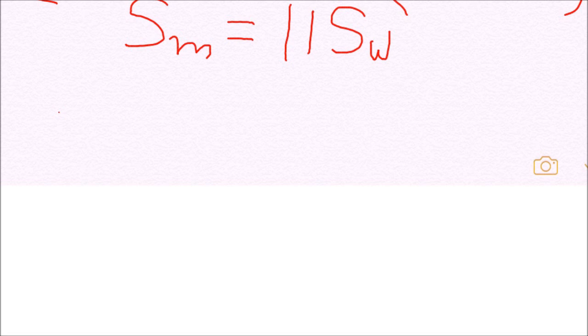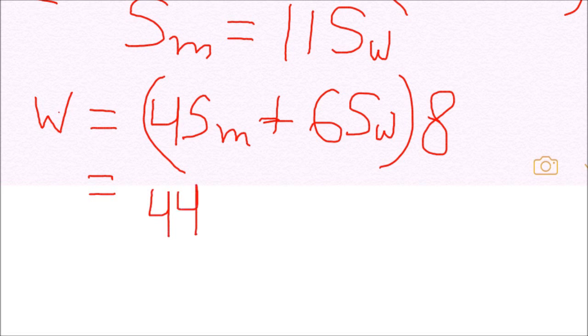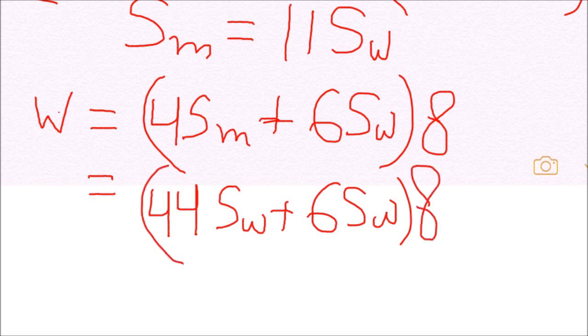Equation 1 is W, total work or distance, is 4 times SM plus 6 times SW into 8. Using the relation in this equation we can change it to 44 times SW plus 6 times SW into 8, which finally becomes 50 SW into 8, that is 400 times SW. So we can say that the total work or total distance is 400 times SW.